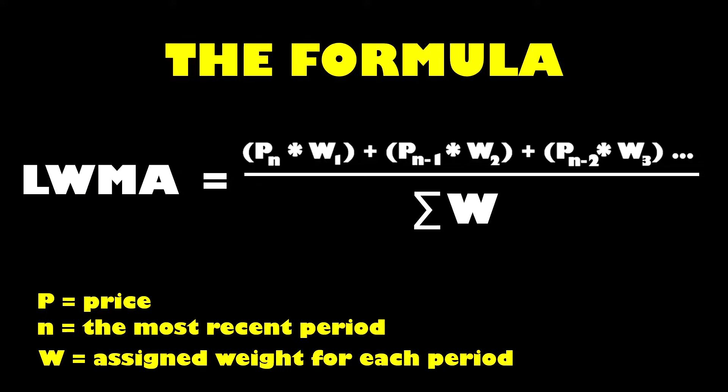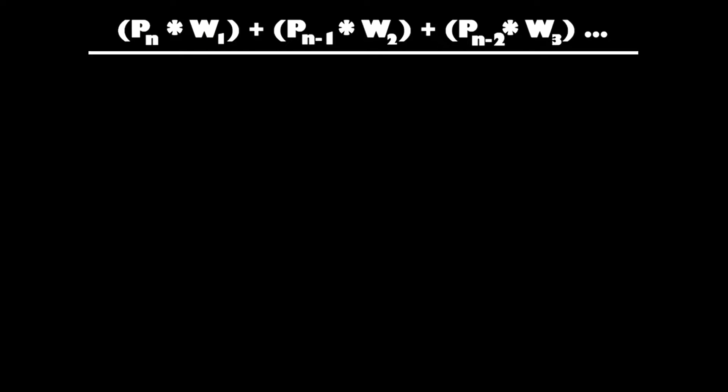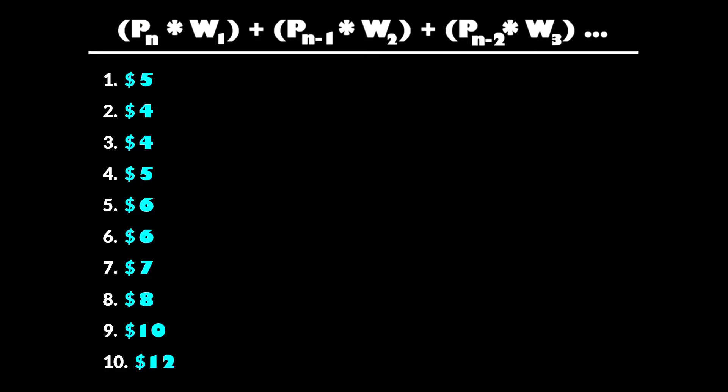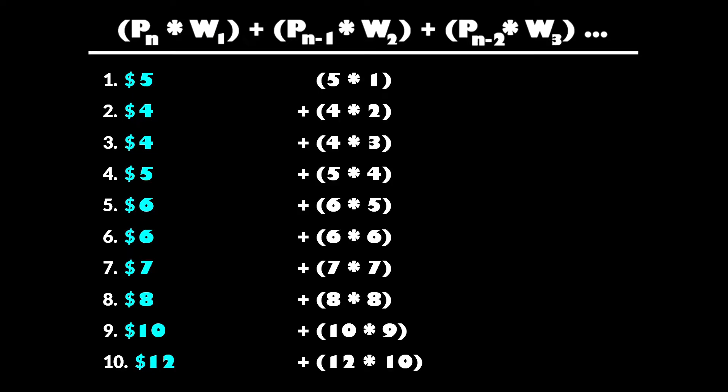Once all of those individual formulas are done we add them together and then divide the total by the sum of the total weight. That's the figure for the period for the Linear Weighted Moving Average. It probably sounds a little complicated if you are hearing it explained for the first time, so let's go through a full example of that 10-period input. We are just starting off with the top half of our formula. We have 10 periods input and we've marked out a price for each period — it's gone up all the way from $5 in the first period to $12 by the 10th period. The 10th period is the most recent period, where current price is.